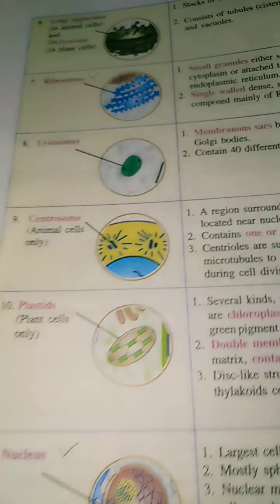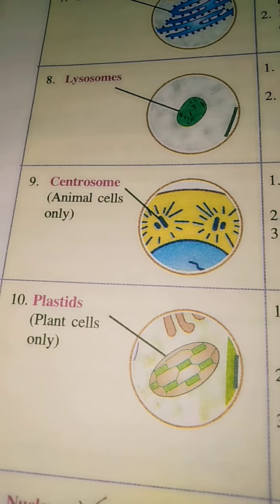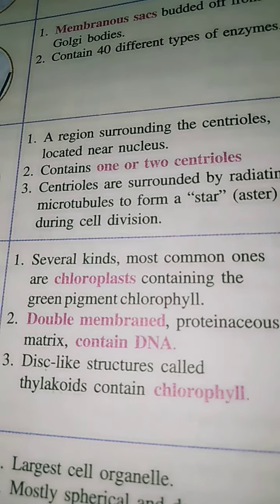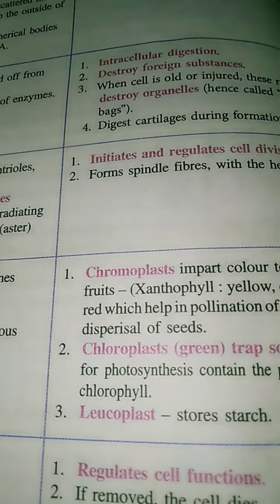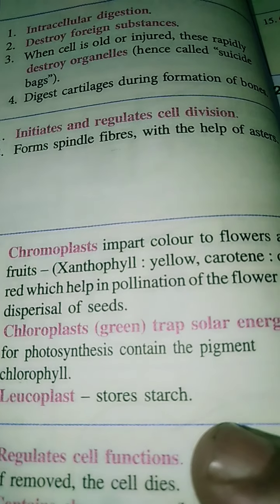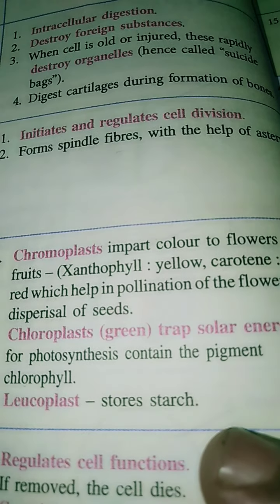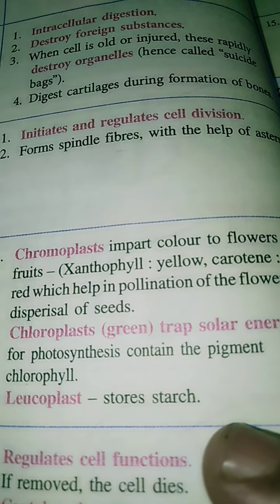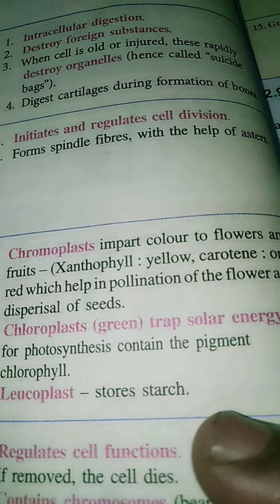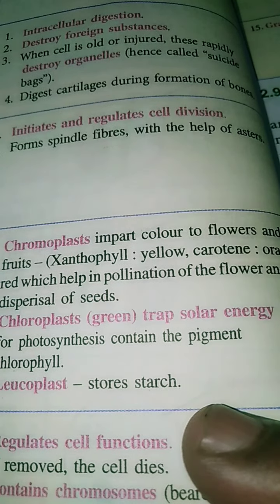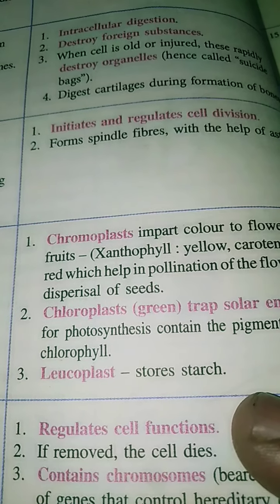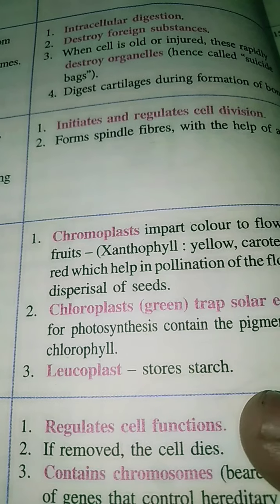Now we move to plastids. Plastids are color-giving components present only in plant cells. There are three types of plastids in plant cells: chromoplasts, chloroplasts, and leucoplasts. Chromoplasts are mainly concerned with giving color to various parts of plants like flowers and fruits. Chromoplasts contain color-giving pigments like xanthophyll and carotene. Xanthophyll gives yellow color to various parts of plants.